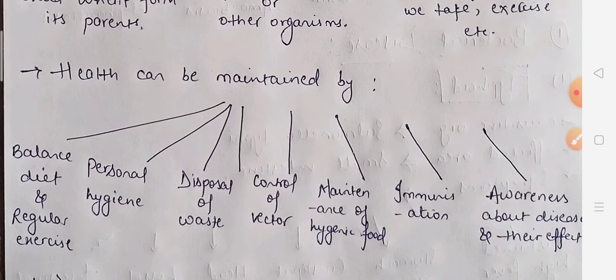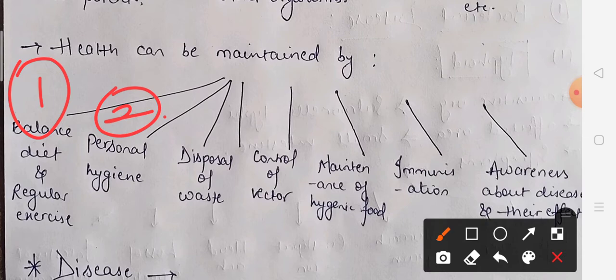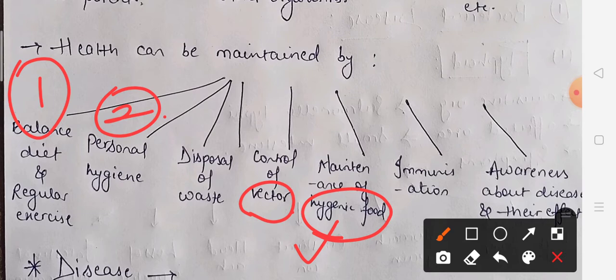We can maintain our health with some parameters. First, take a balanced diet and do regular exercise. Second is personal hygiene. Third is disposal of waste. Fourth is controlling vectors — carriers that help spread disease, for example house flies or mosquitoes. If we clean their breeding places, we can prevent disease. Fifth is maintenance of hygienic food. Sixth is immunization — participating in time-to-time vaccines. And last, having knowledge about diseases and their effects helps us maintain our health.